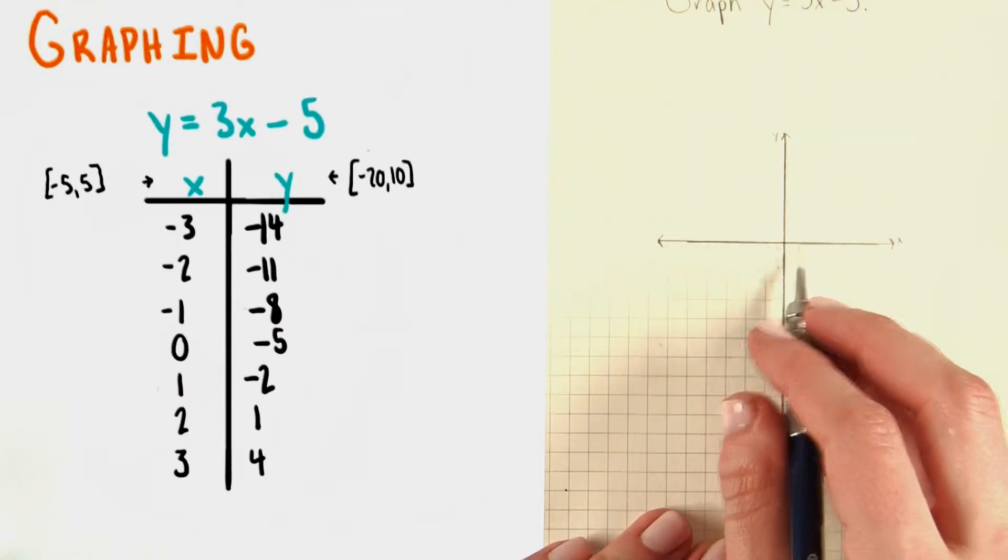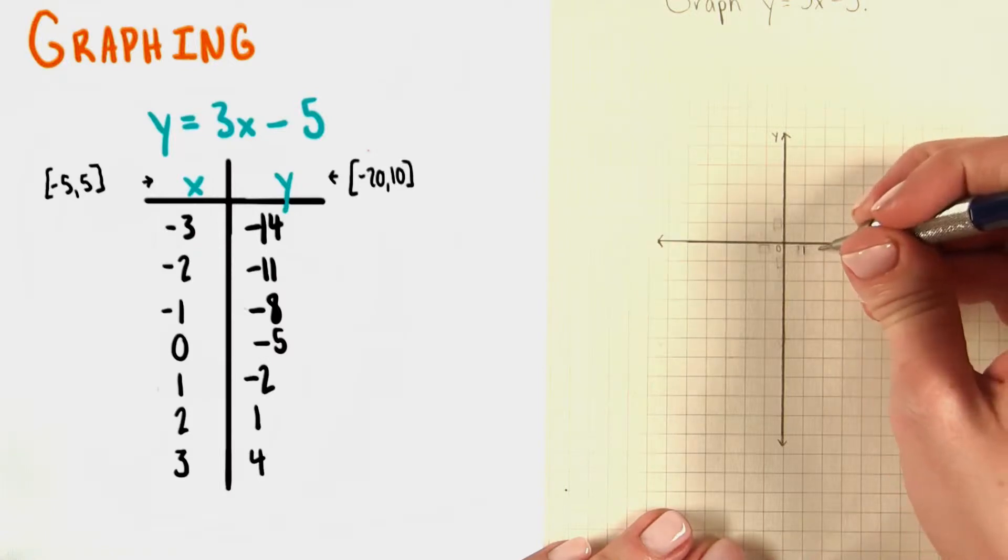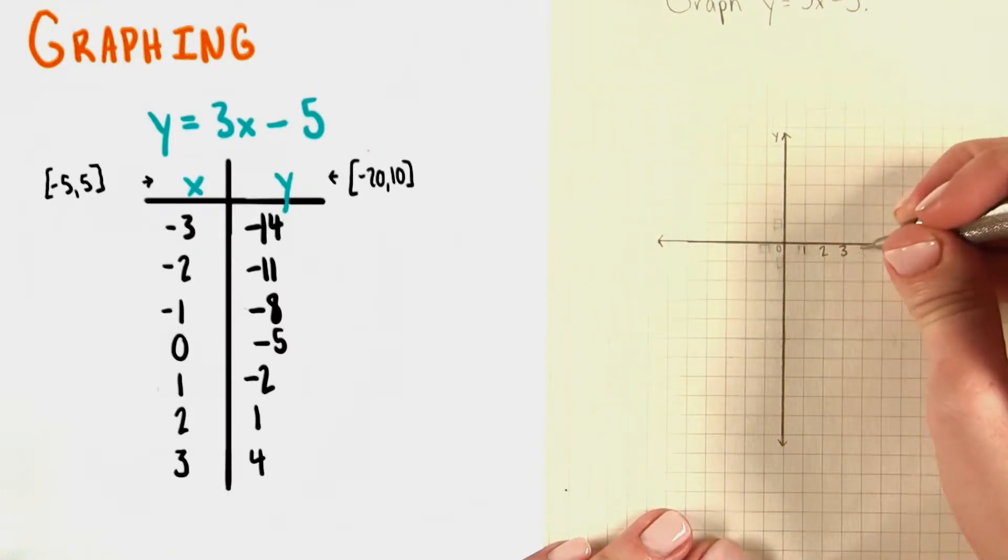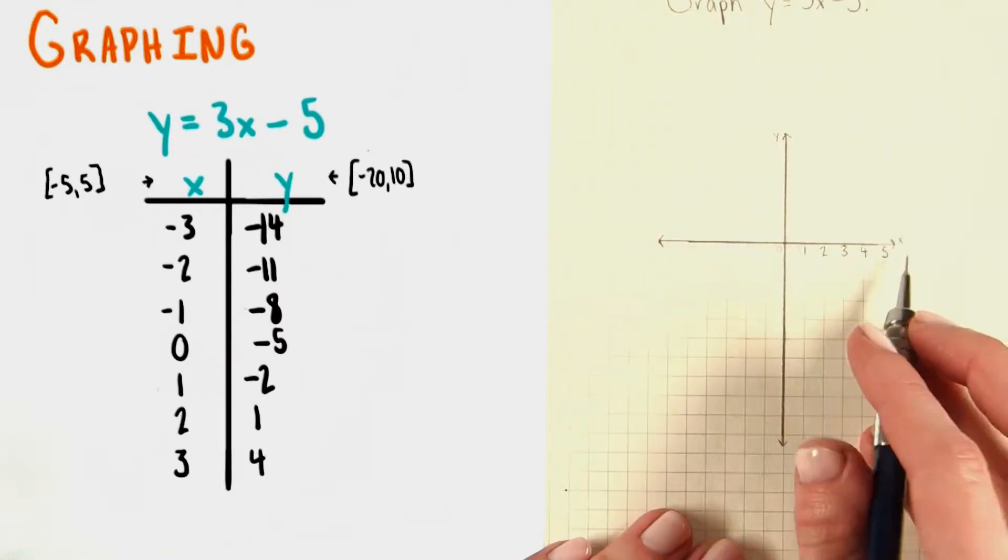So when we step from 0 one step over, we need to label that 1, 2, 3, and so on. And you see we get to 5 on the positive edge of the axis.